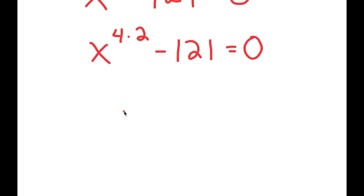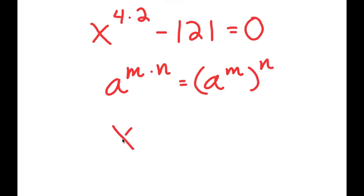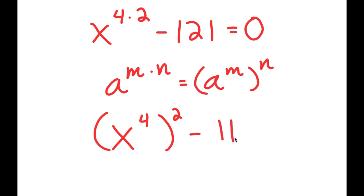If I have something in the form a to the power of m times n, this is equal to a to the power of m to the power of n. So x to the power of 4 times 2 equals x to the power of 4 to the power of 2. And this minus 121, which we can rewrite as 11 to the power of 2.